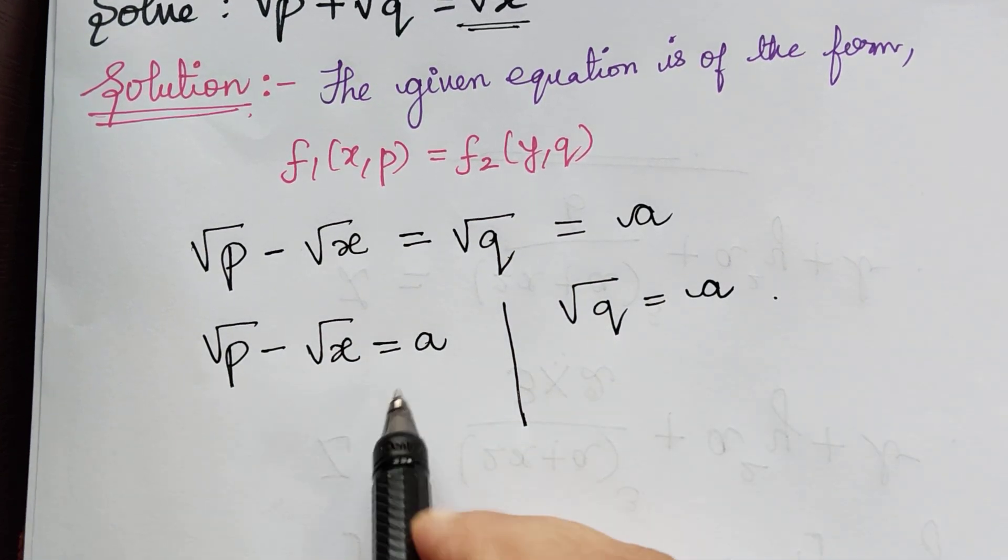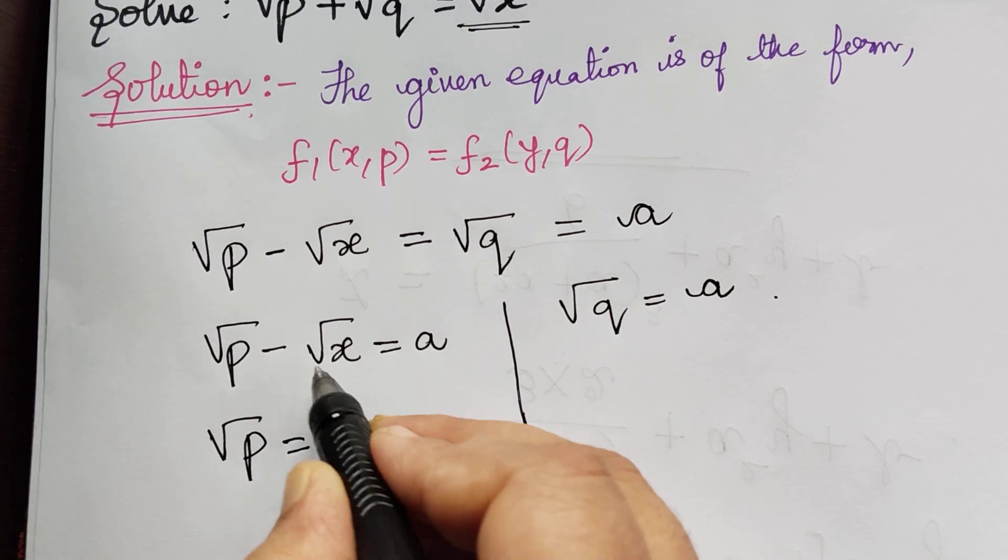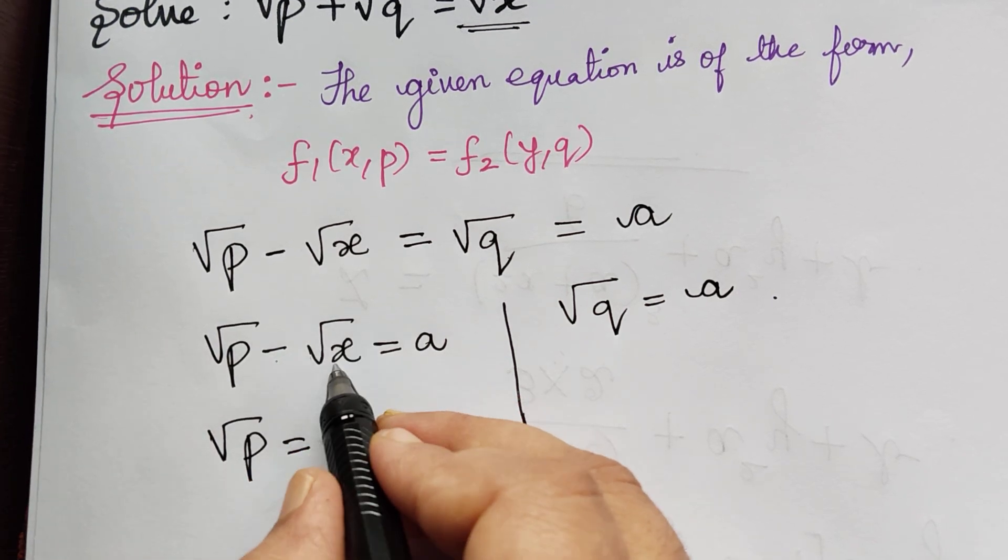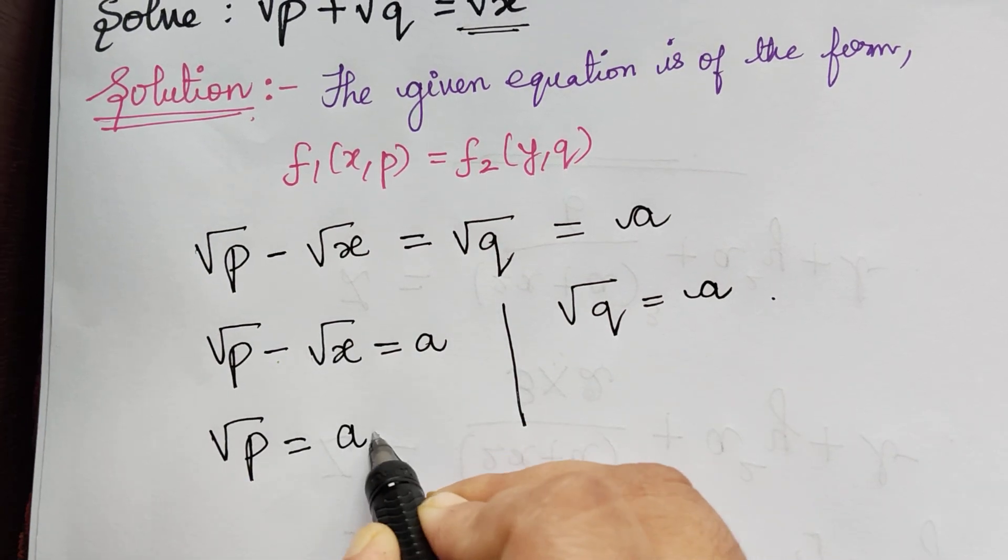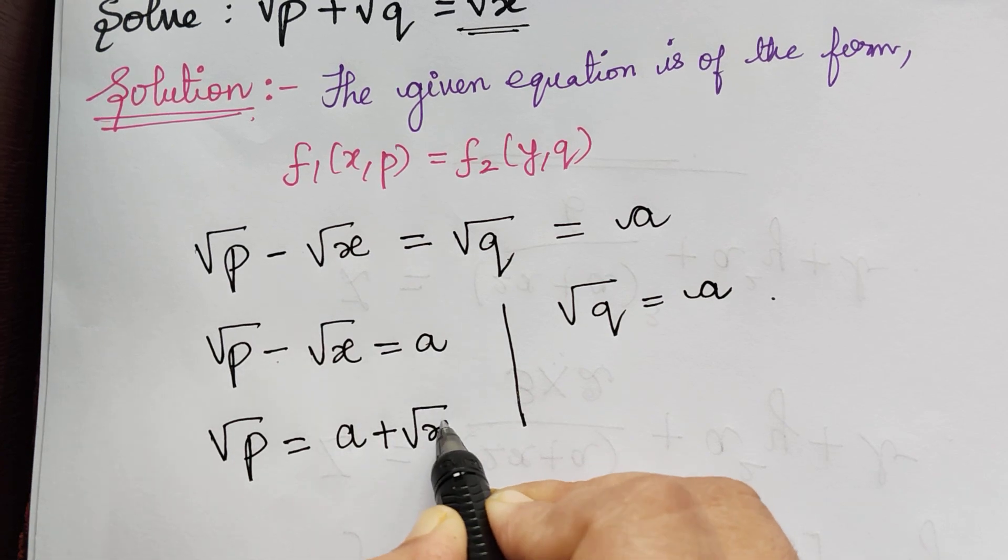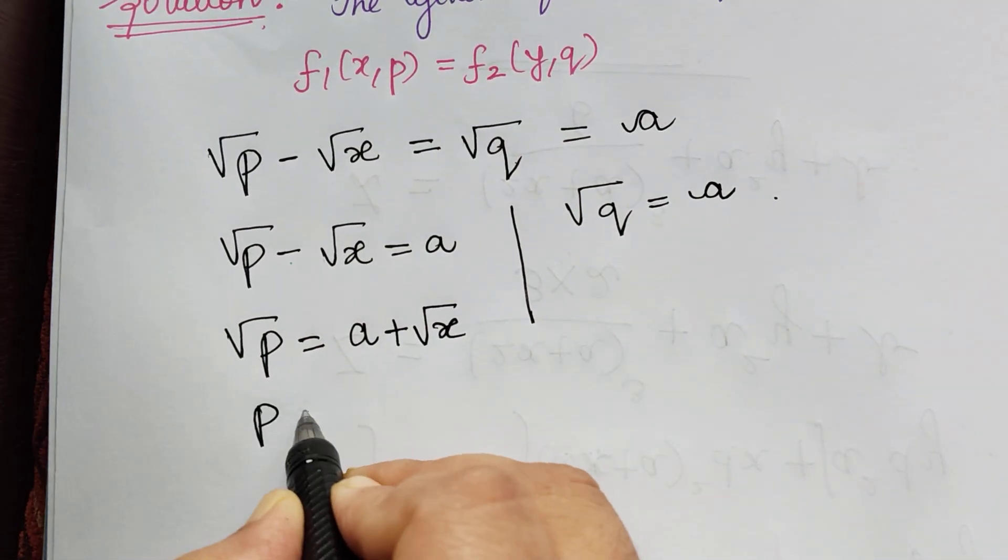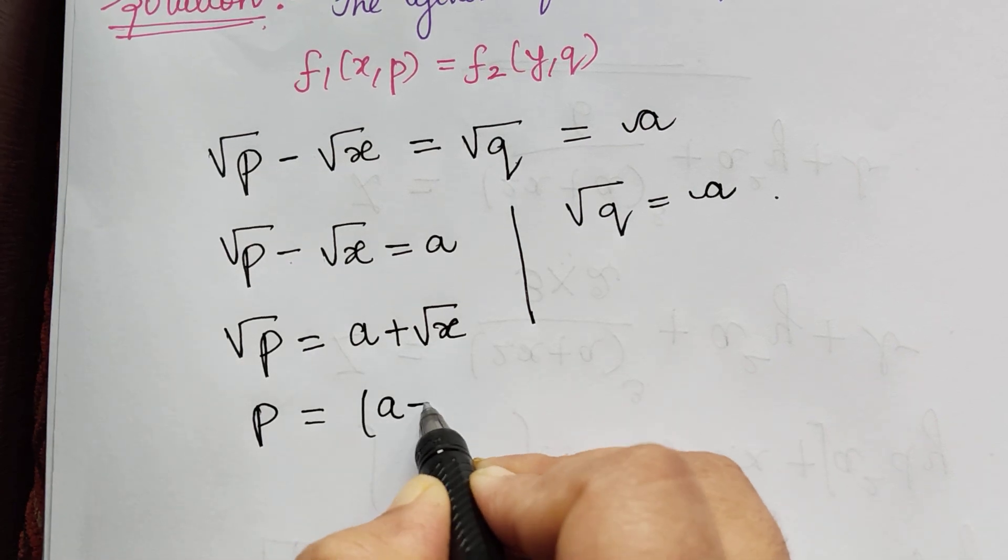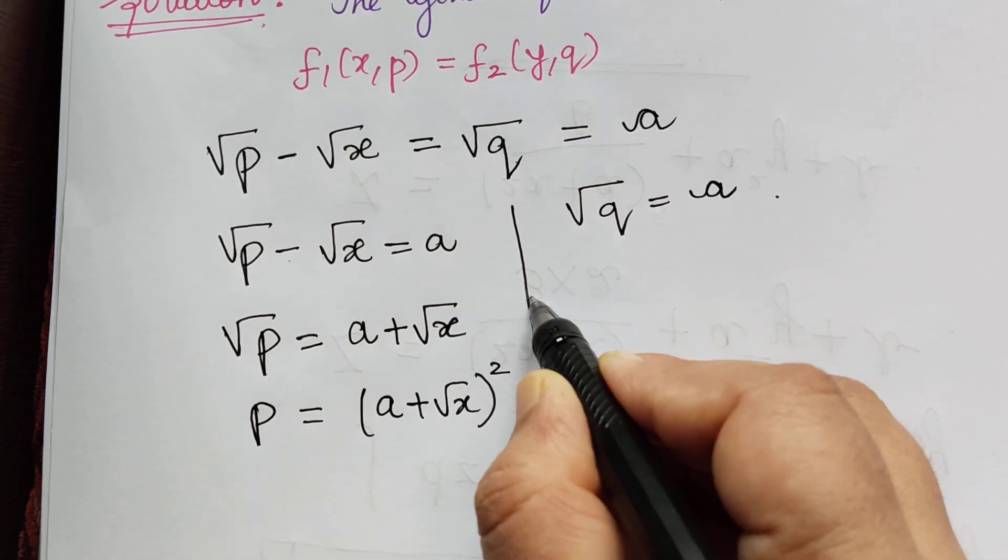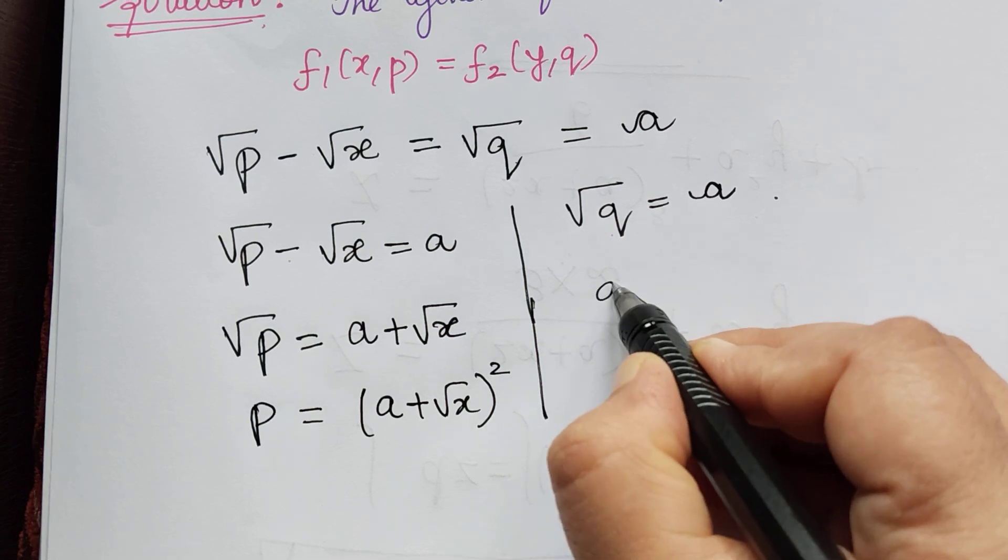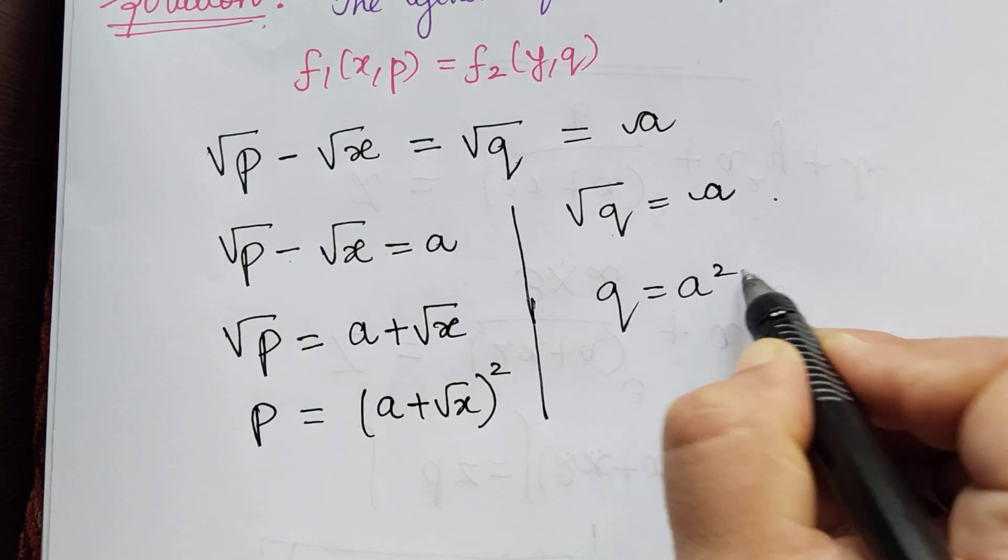Now from this, we obtain square root of p to be equal to, taking this negative square root of x to the right, we will have a plus square root of x. So squaring on both the sides, we get the value of p to be equal to a plus square root of x, the whole square. And here squaring on both the sides, the value of q is equal to a square.